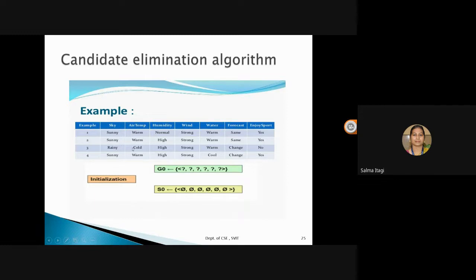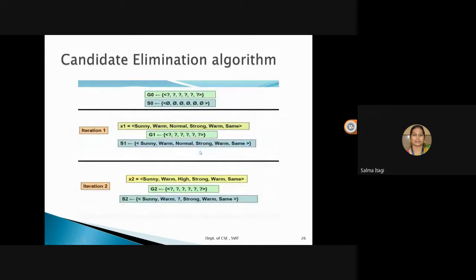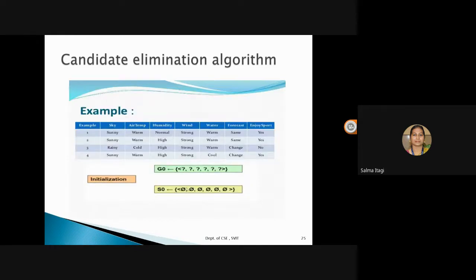The attributes are: sky, air temperature, humidity, wind, water, and forecast. Depending on these attributes, the target function is a dependent attribute on these independent attributes. Initially, the first tuple is initialized as the specific hypothesis, since it is a positive sample — it is yes. We will do the same thing as we did for the Find-S algorithm.